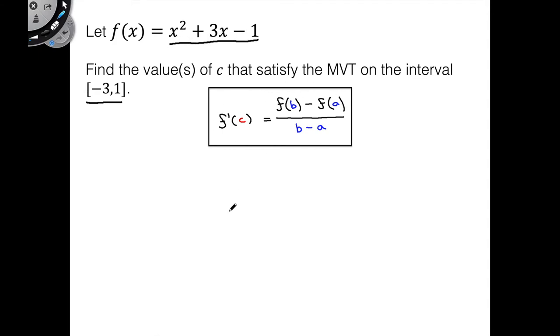And of course this is what we want to hold true for the mean value theorem. So before we start this though, there's a couple of things we need to verify. Firstly, we want to verify if f(x) is continuous on [-3,1], and then we want to verify if f(x) is differentiable on (-3,1).